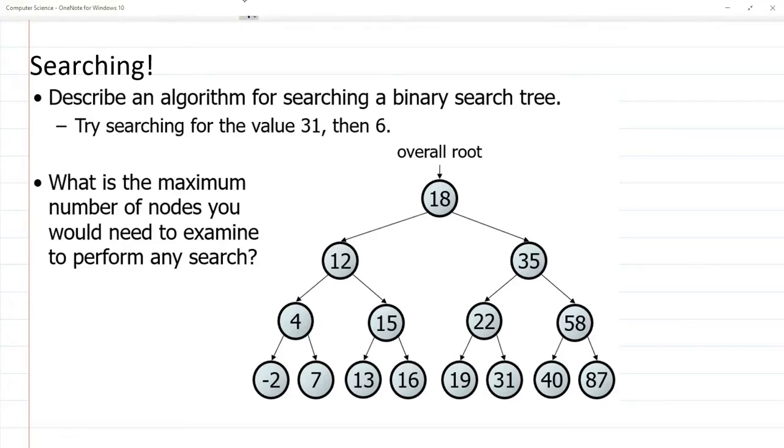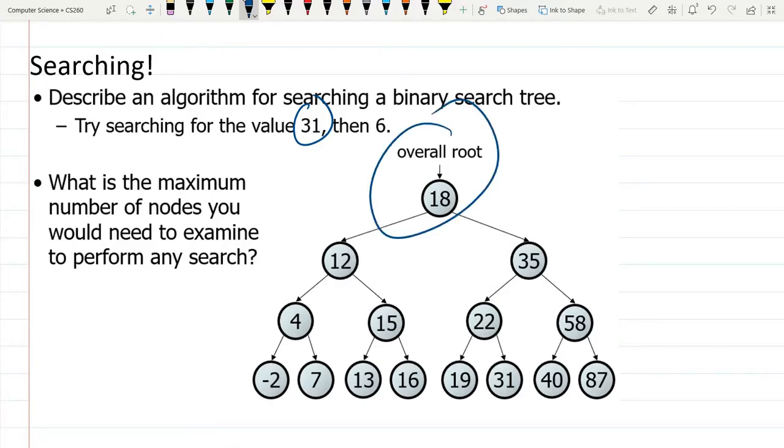So why is this useful? We're going to search for 31. We're going to start at the root and then decide where to go.